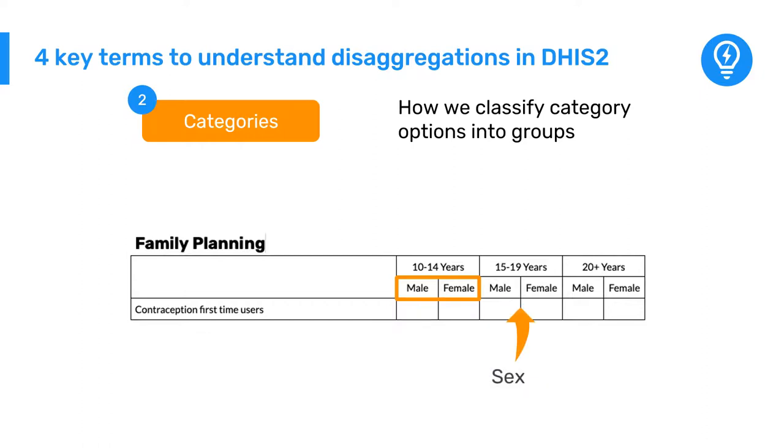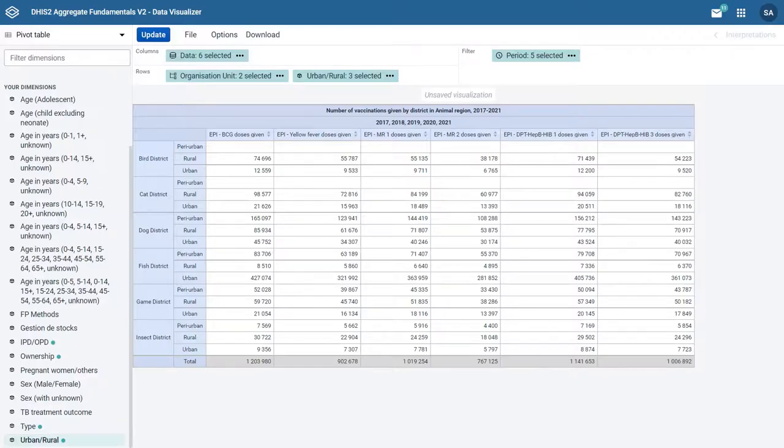10-14 years, 15-19 years, and 20-plus years make up the RMN-CAH age category. Note that the categories are what appear in the analytics applications as disaggregations.